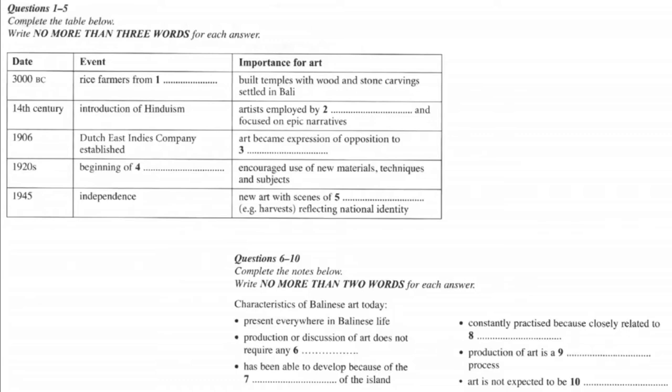This was an important period in the artistic development of the island, when sculptors, poets, priests and painters worked together in the service of the ruling families. Rather than painting everyday scenes, artists concentrated on narrative paintings, illustrating the epic stories of Hinduism.